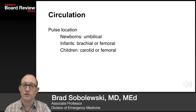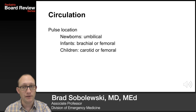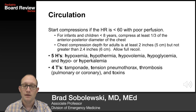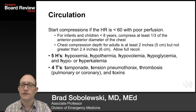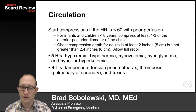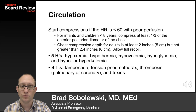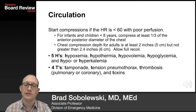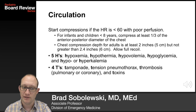For circulation, pulse location: in newborns you can use the umbilical; for infants, brachial or femoral; and in children, carotid or femoral. Start compressions if the heart rate is less than 60 with poor perfusion. For infants and children under eight years of age, compress at least a third of the depth of the anterior-posterior diameter of the chest.